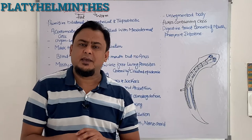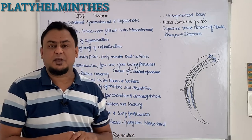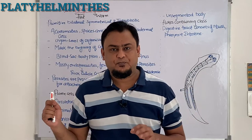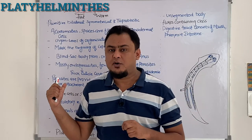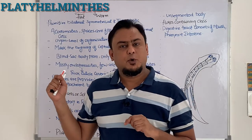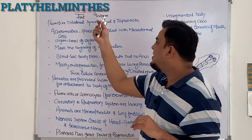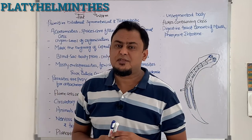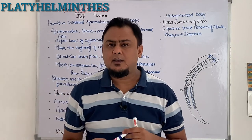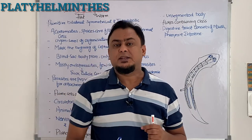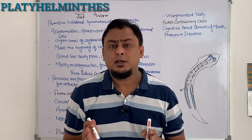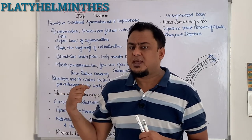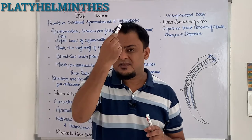One basic difference between earthworms and flatworms is that Platyhelminthes consists of unsegmented worms. These are primitive bilaterally symmetrical animals. If you divide an organism by a vertical plane into two identical halves, that is a bilateral symmetrical condition. So the symmetry of this phylum is bilateral.